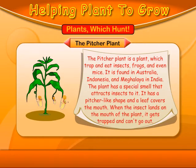Plants which hunt. The pitcher plant is a plant which traps and eats insects, frogs, and even mice. It is found in Australia, Indonesia, and Meghalaya in India. The plant has a special smell that attracts insects to it. It has a pitcher-like shape and a leaf covers the mouth. When the insect lands on the mouth of the plant, it gets trapped and cannot go out.